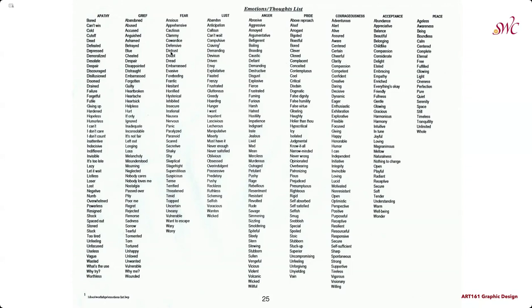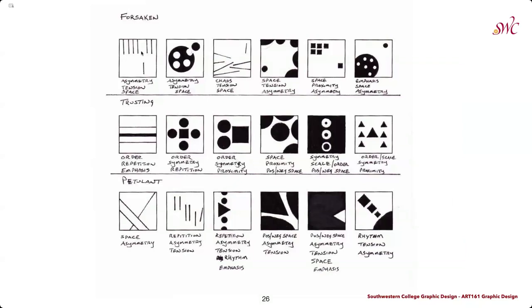Here we can see the example of the emotions and thoughts list provided in the module. I would suggest using one word from different columns and thinking about how you can combine the different principles from Part 1 to express these different ideas. For example, if you choose the word 'forsaken,' you might think about using lines and the principles of asymmetry, tension, and space — or points with asymmetry, tension, and space. On the far right, we have a mix using emphasis, space, and asymmetry with points. After completing those sketches, the next word chosen was 'trusting,' using lines and the principles of order, repetition, and emphasis.